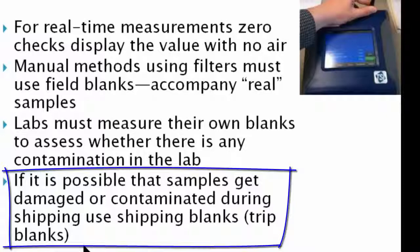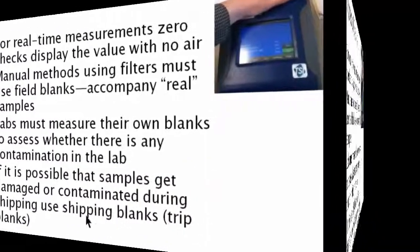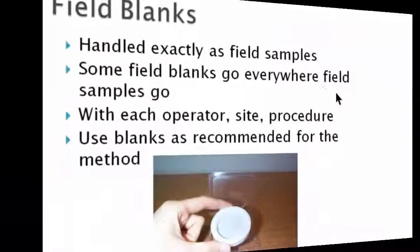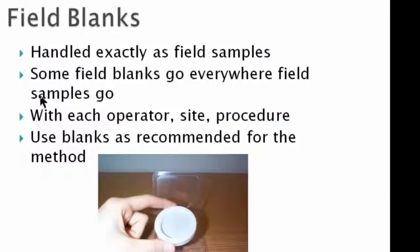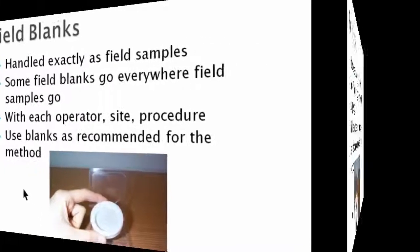Trip blanks just go with the cooler, then sit in the office, and then get transported back in the cooler to the lab just to see if anything happened during the shipping process. Field blanks go everywhere the field samples go. This is a picture of a PM2.5 filter. If you're doing an FRM method, blanks are very critical and you have to be really strict about using them.